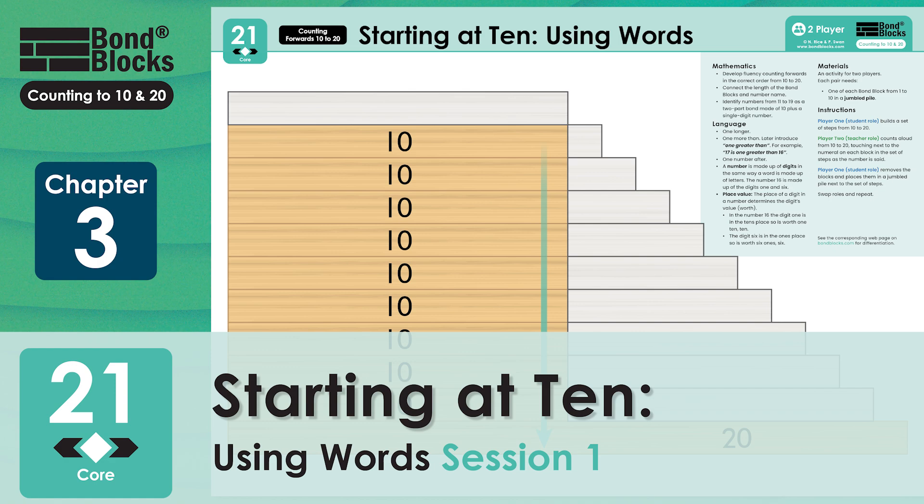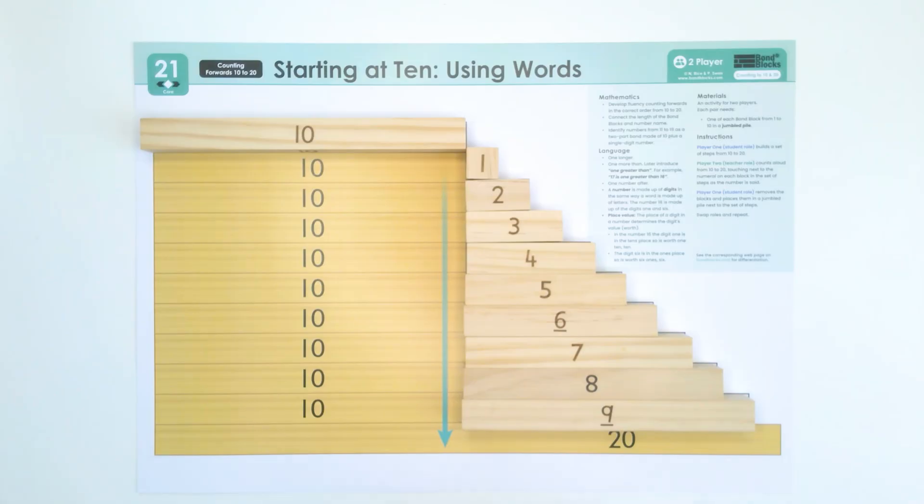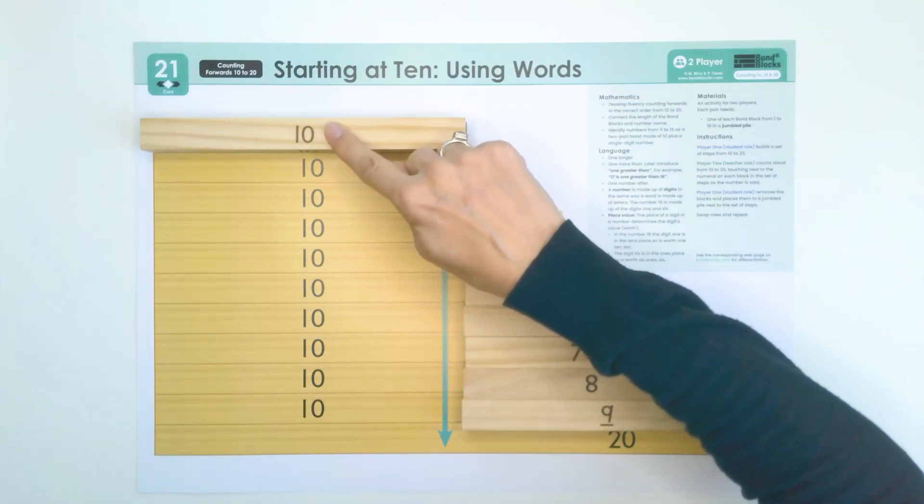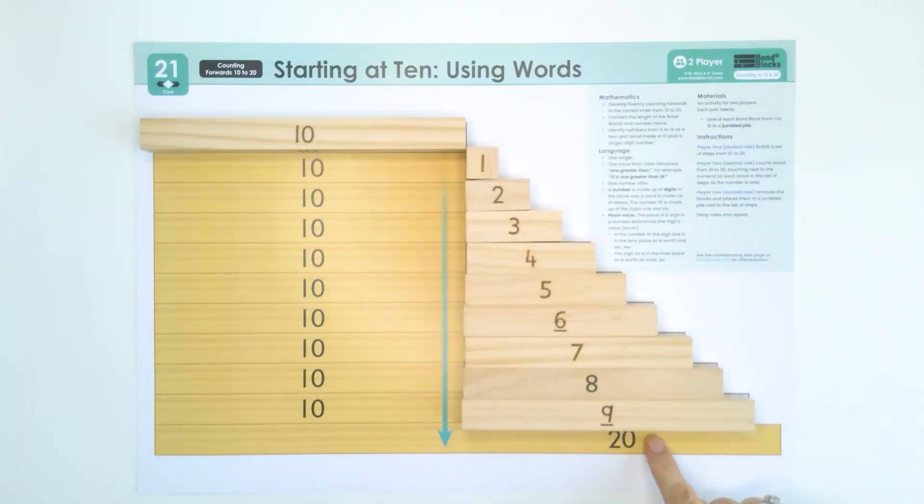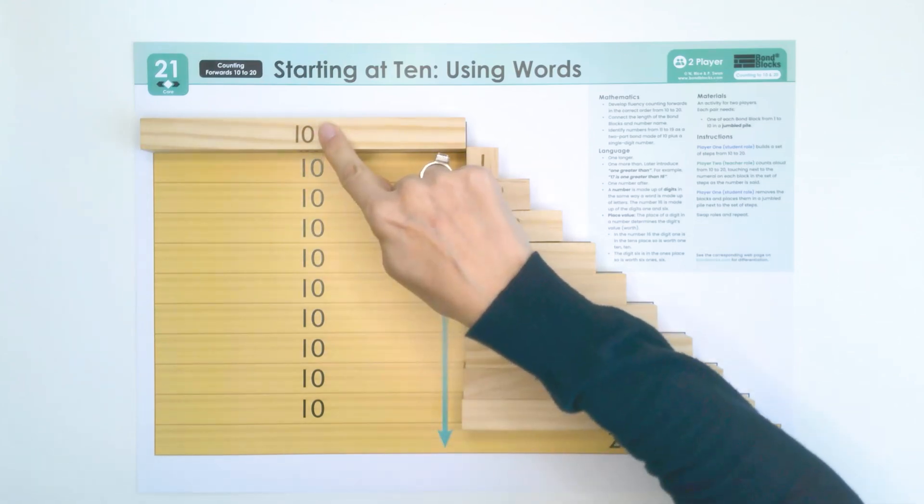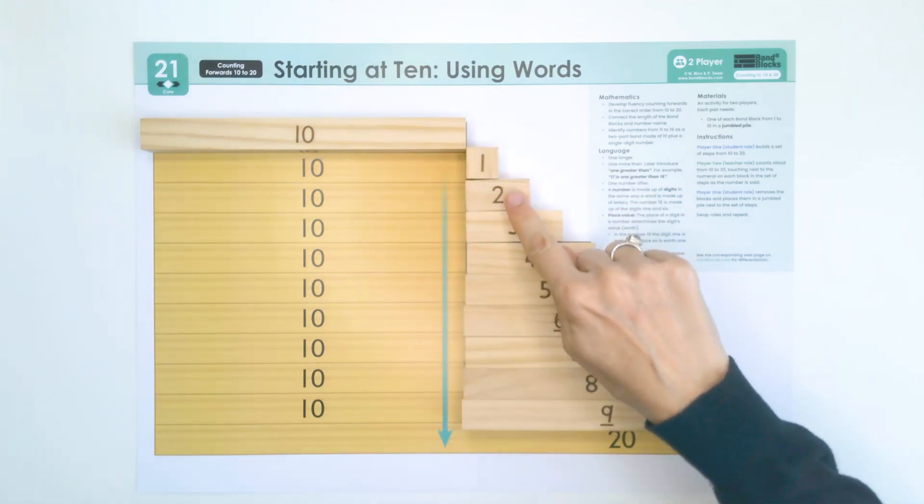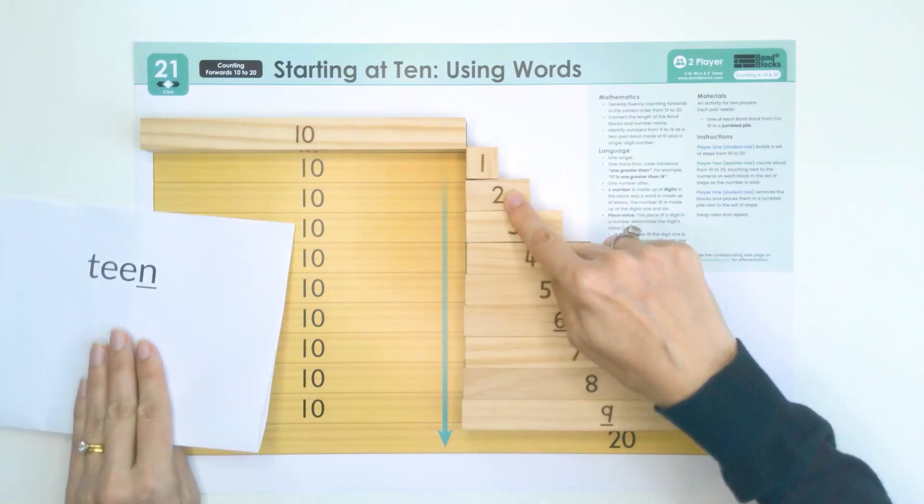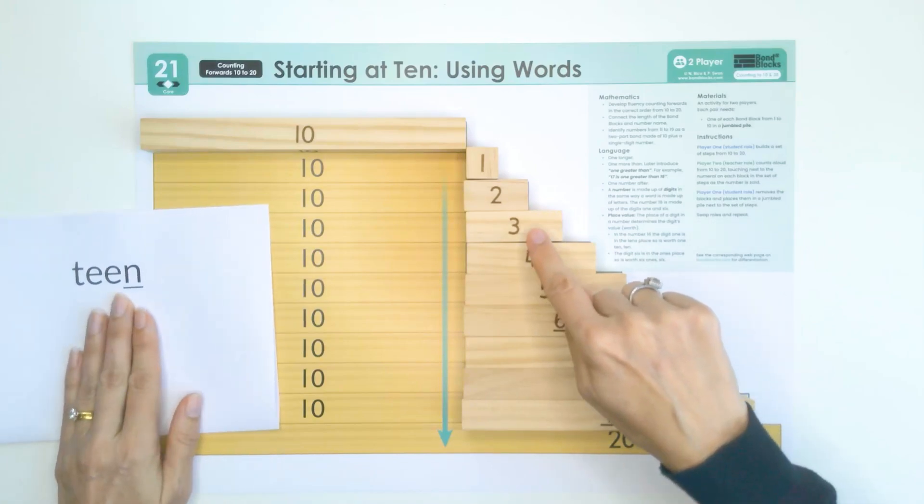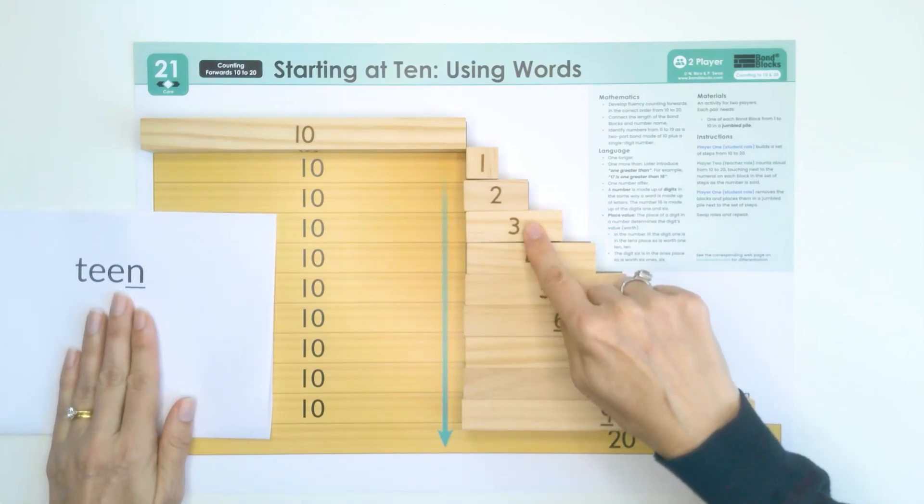Welcome to Activity 21. In this activity, we're going to be counting forwards from 10 to 20. When we count 10, 11, 12, we are going to concentrate on saying the number names very clearly, especially when we say 13.